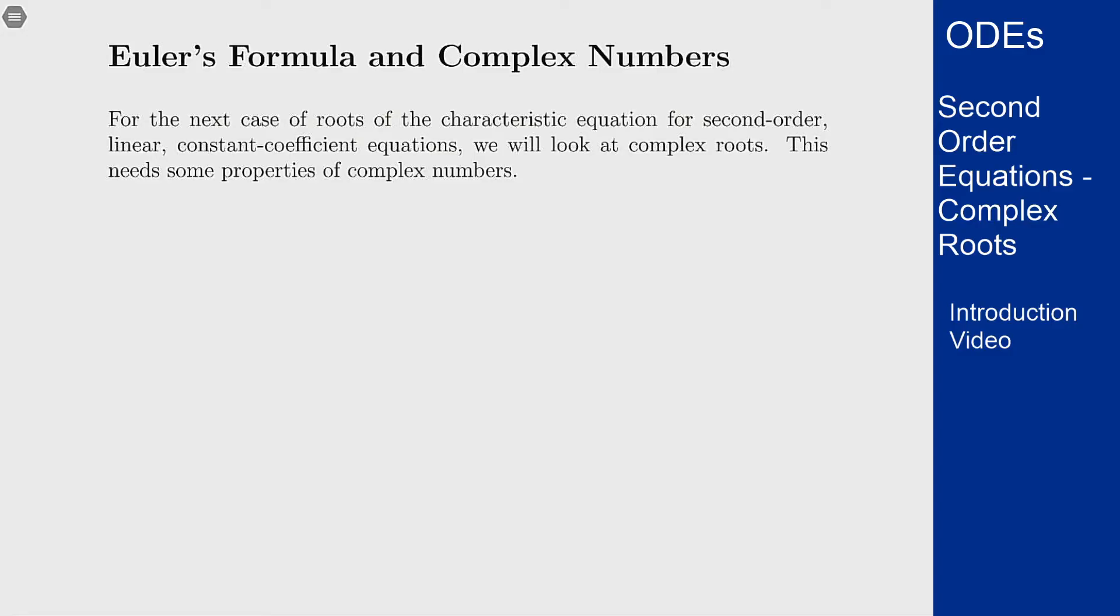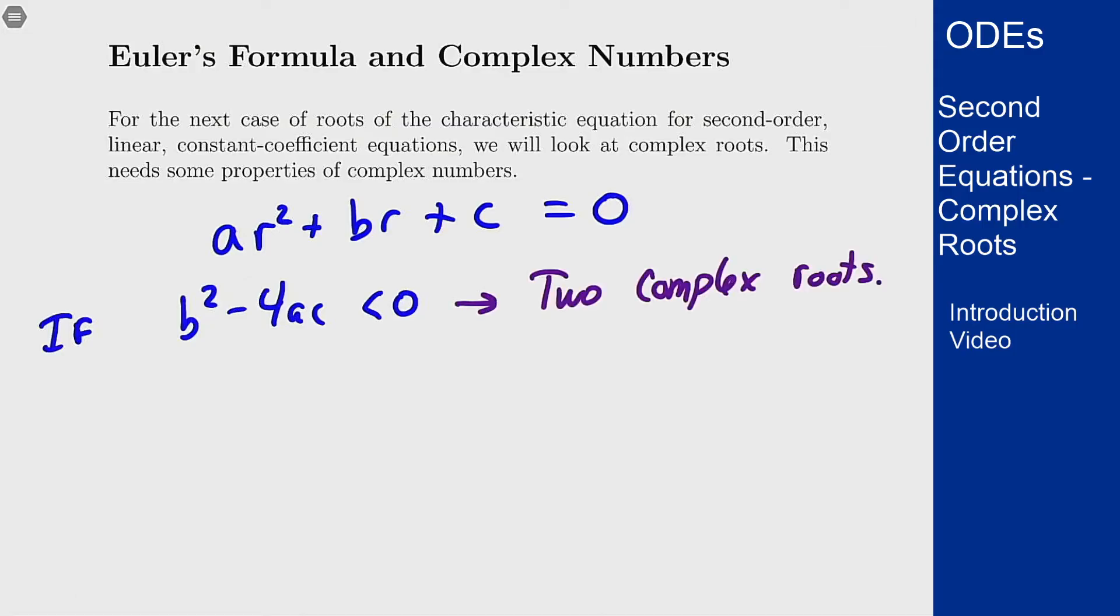We end up with something like ar² + br + c = 0 to solve for r. Now if we have b² - 4ac < 0, this results in two complex roots. To be able to handle these sorts of situations we need to know how to deal with complex numbers.